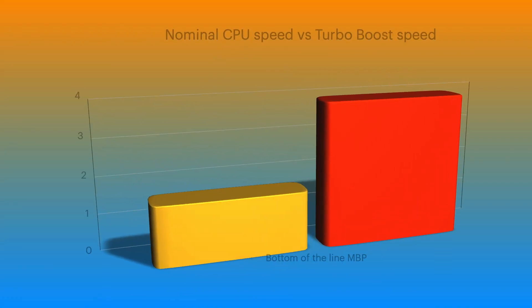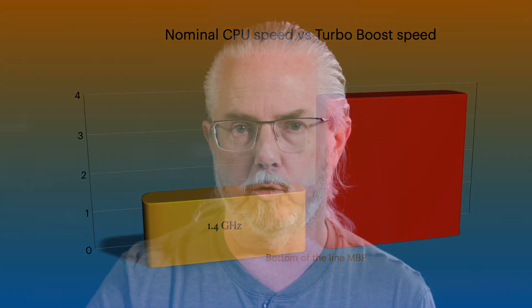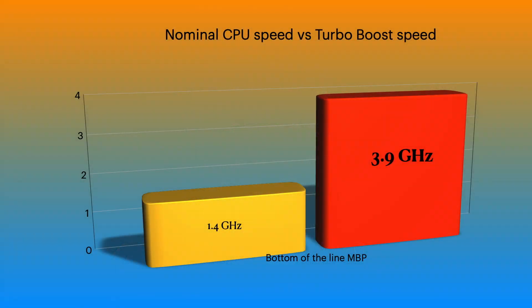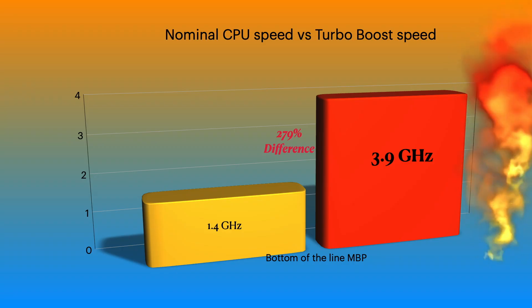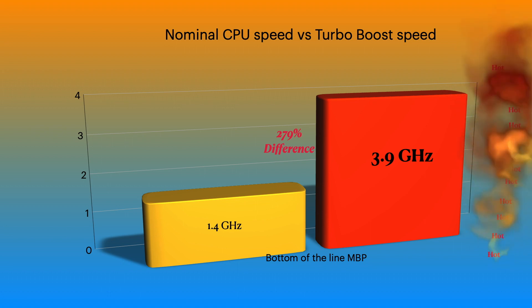At the bottom of the line, we have a processor that runs at 1.4 GHz, and when Turbo Boost kicks in, it can jump up to 3.9 GHz — that's a 279% difference, almost three times as fast. Using the car analogy, if you tripled the speed of your car on the highway, the engine would get very, very hot very quickly, the fan comes on, and you get lots of fan noise.